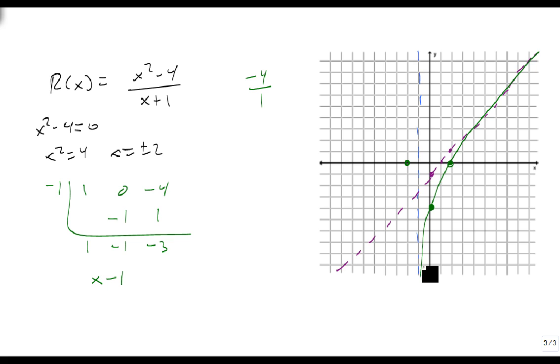On this side, since this one went down, it's going to pass through, hit here, and then follow out. So there's our graph of x squared minus 4 over x plus 1.